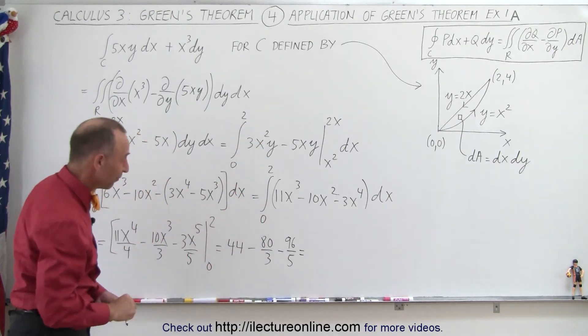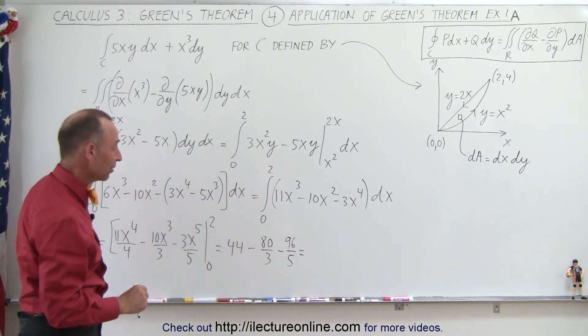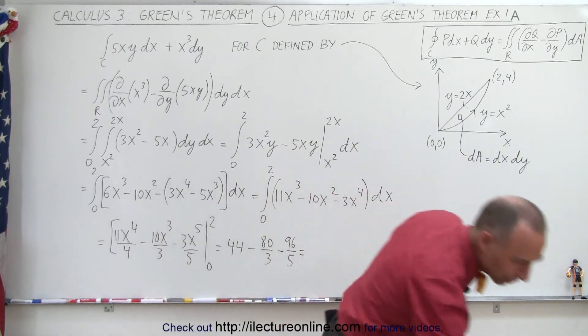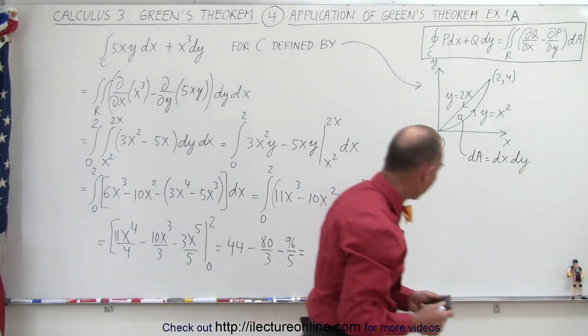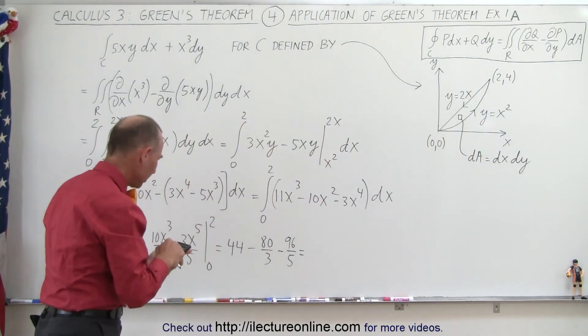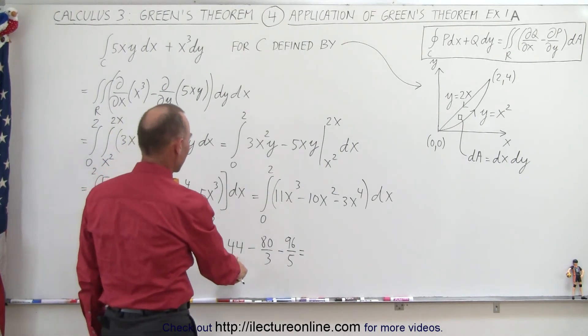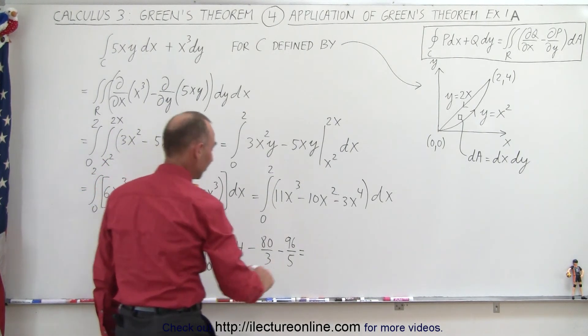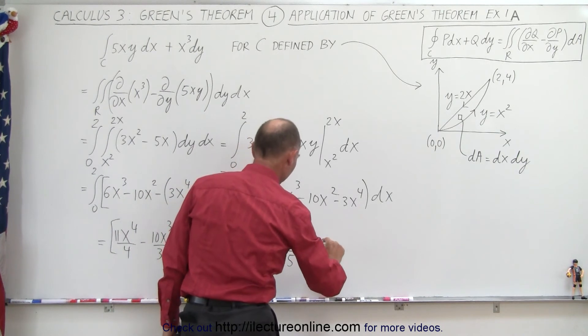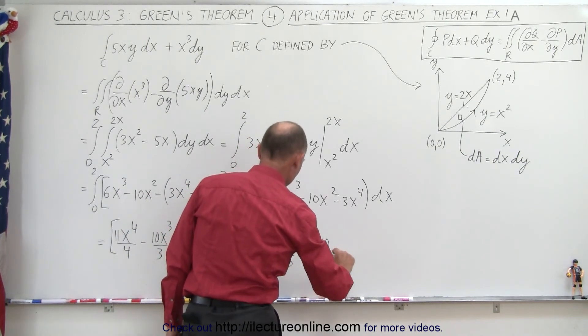And now we just have to simplify that a little bit. Looks like our common denominator is 15. I think I'm going to grab the calculator, make sure I don't make any silly mistakes here. Let's see here. 15 times 44, that's 660. So that would be 660 divided by 15, minus, that would be 5 times 80, that would be 400 divided by 15.